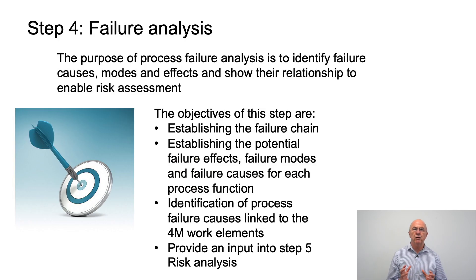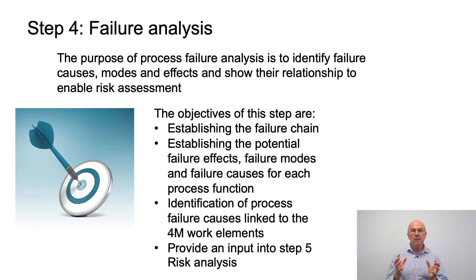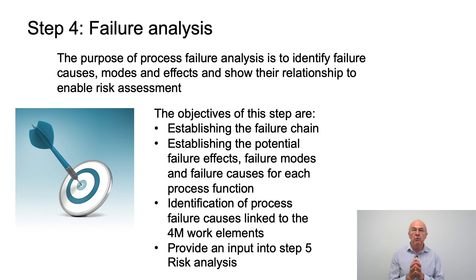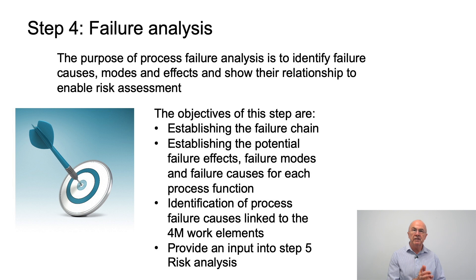Step four is called failure analysis. The purpose of this step is to identify failure causes, failure modes and effects, and show their relationship to enable risk assessment. The objectives are to establish the failure chain, establish the potential failure effects, failure modes and failure causes for each of the process functions, and identify the process failure causes — which will link to the work we did earlier on understanding the 4M work elements. This will give us the input to go into step five, risk analysis.